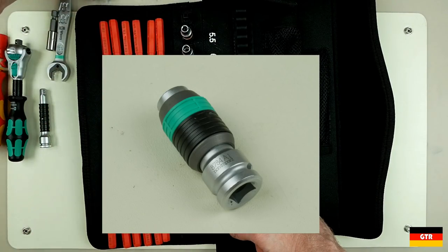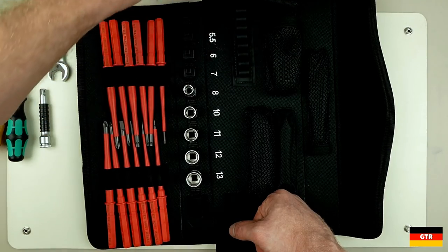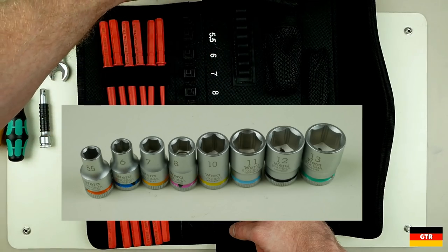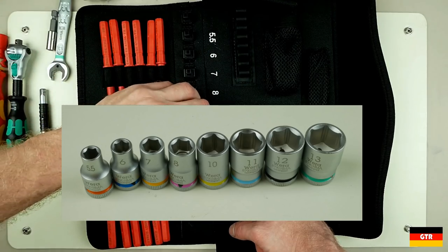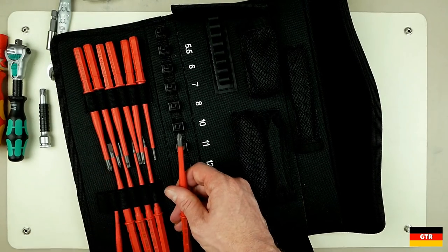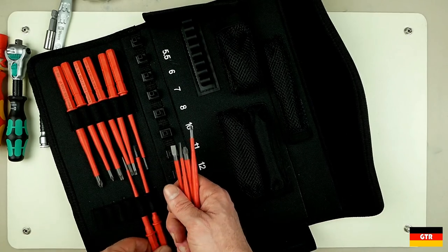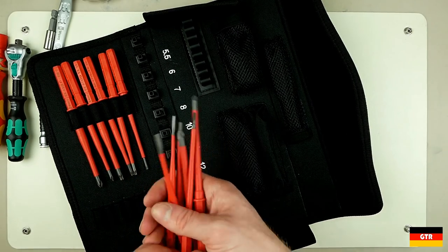Then we have the 8784A1 Zyclob bit adapter, and then we have a series of quarter-inch drive sockets from the 8790 series, from 5.5 to 13, excluding the 9mm. And then finally we have a bunch of these Kraftform compact VDE blades, including four slotted, a Torx T10 through T25, a Phillips No. 1, No. 2, and a Posi Drive No. 1, No. 2.